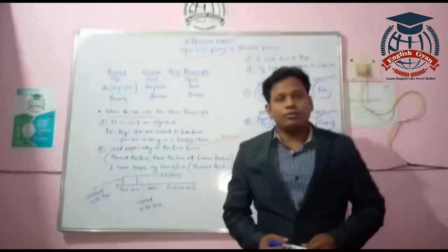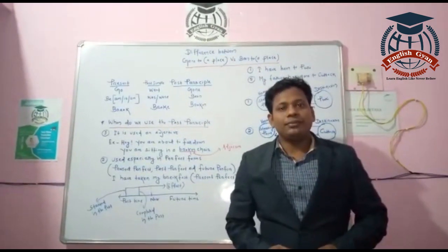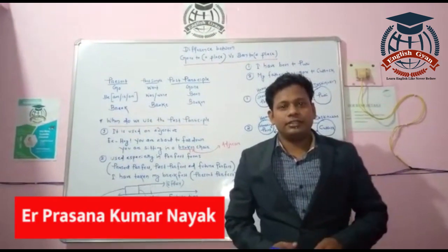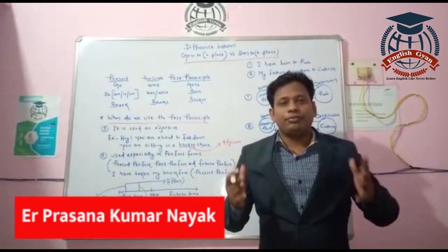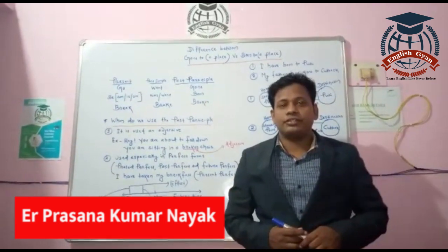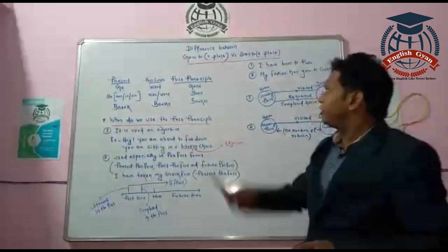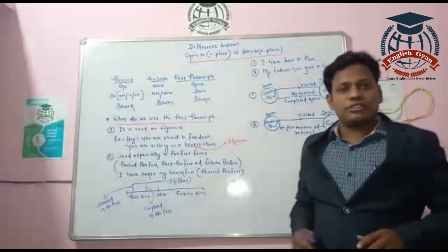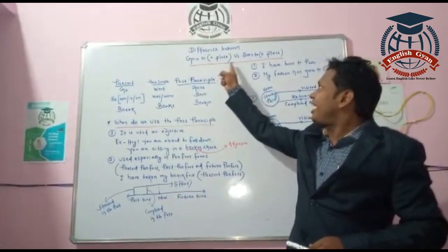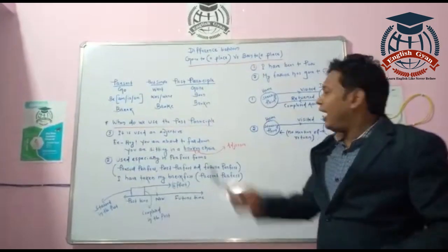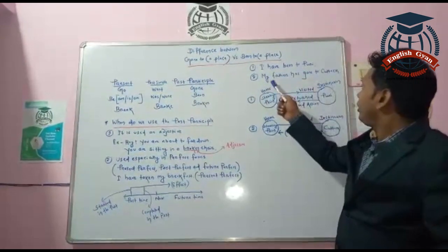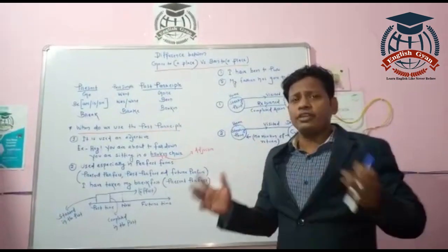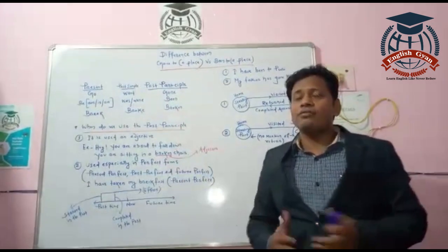Hello guys, welcome to EnglishCamp, your ultimate destination to learn this beautiful language effectively. Today we have picked a very interesting topic for you guys. What's the difference between 'gone to a place' and 'been to a place'? For example: 'I have been to Turin' and 'My father has gone to Qatar.' Is there a difference?